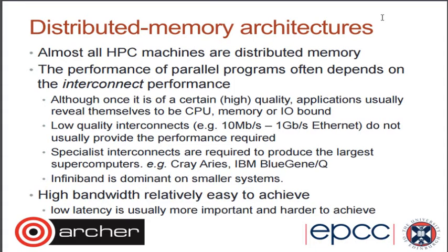Almost all HPC machines now use distributed memory architecture, and the key thing is the interconnect. It has to be high quality — if you've got cores on one node and cores on another, and you're trying to access thousands of cores distributed across nodes, you don't want inter-node communication to be slow. If you have a high quality interconnect, it stops being a problem, and other things like CPU, memory, and I/O become the major constraints. Low quality interconnects at around 10 gigabits are suitable for high-throughput problems like thousands of independent serial jobs in a task farm, where you don't need fast inter-node communication.